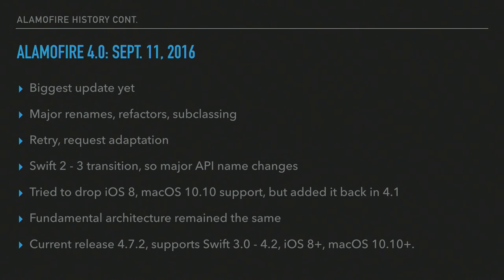Alamofire 4.0 was released almost two years ago in 2016 — the biggest update yet. There were major renames because of Swift 3.0 and the great renaming, so we redid a lot of APIs to match Swift naming conventions. Automatic retry and request adaptation were added. We tried to drop iOS 8 support, but people were forking the library and doing their own unofficial iOS 8 branch, which was dangerous because they didn't port back bug fixes or security changes. The current release is 4.7.3, supporting Swift 3.0 to 4.2, iOS 8 and above, macOS 10.10 and above, tvOS, and watchOS, but no Linux support.